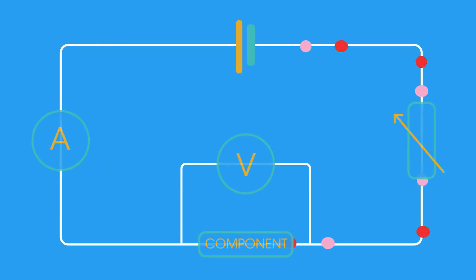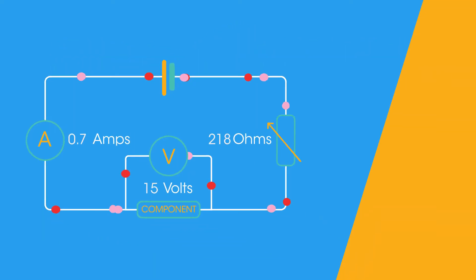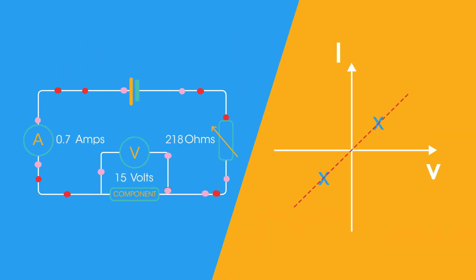This apparatus can be used to deduce the IV characteristic of a component. By changing the resistance of the variable resistor, you can change the current in the circuit measured by the ammeter A, and then the voltage across the component can be measured using the voltmeter V. The values obtained for a range of values for I and V can then be plotted.